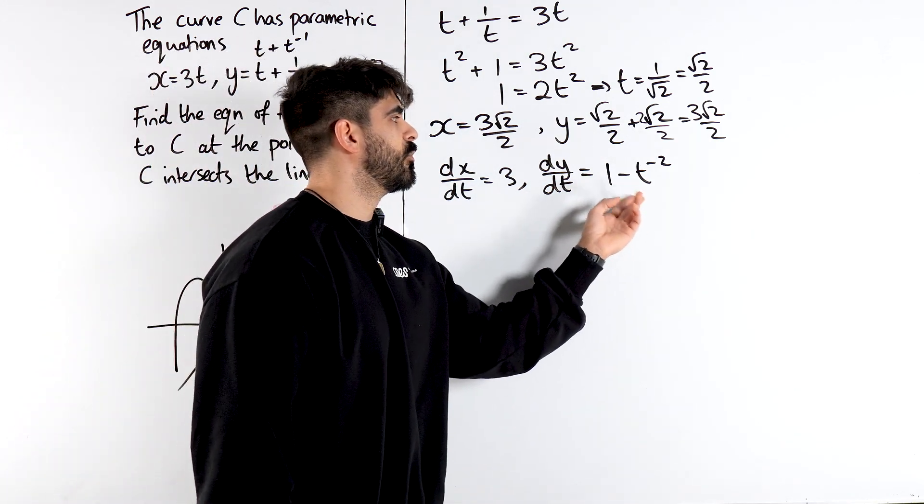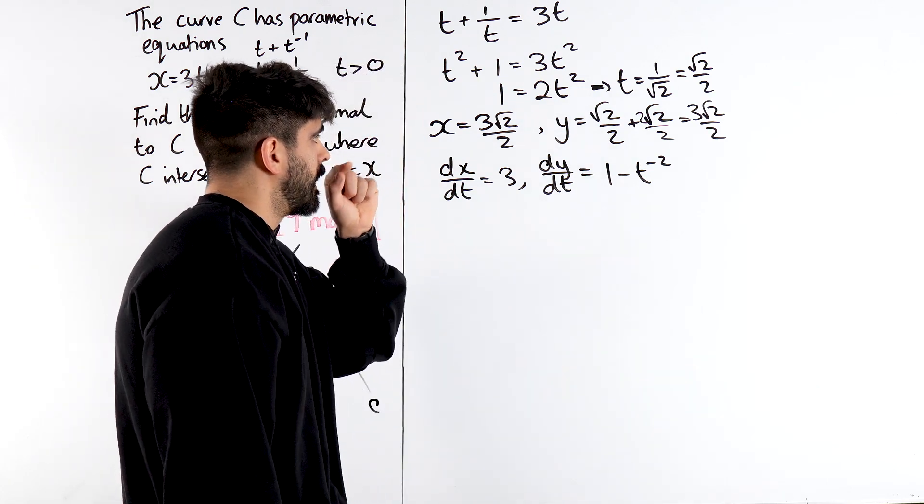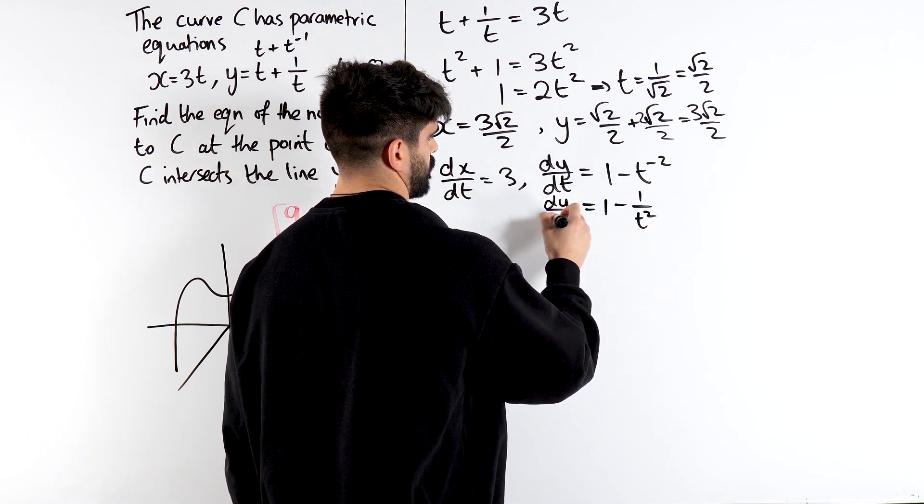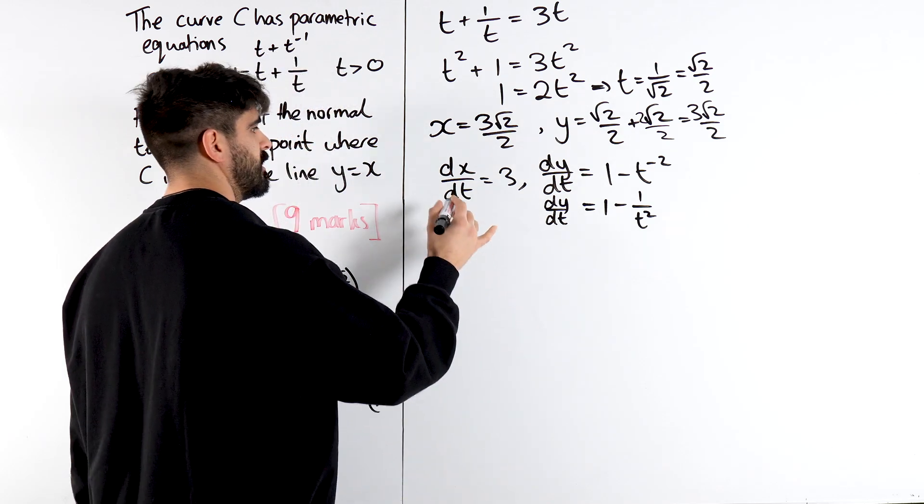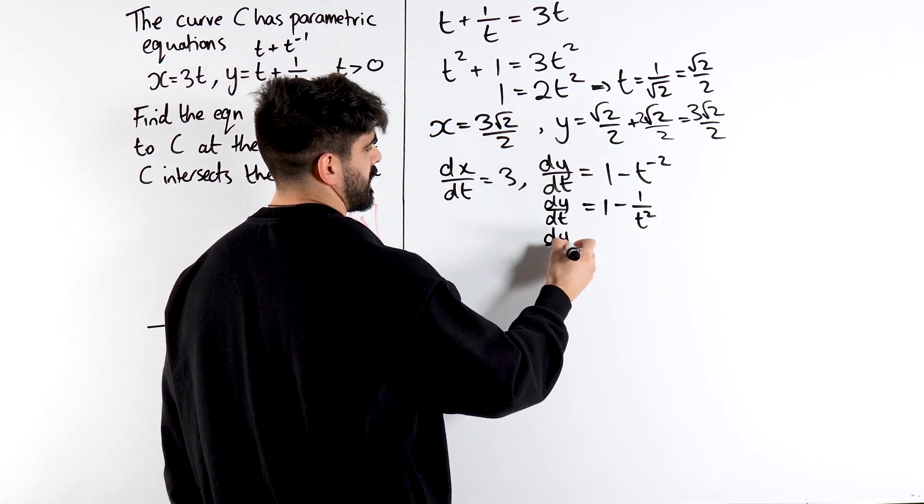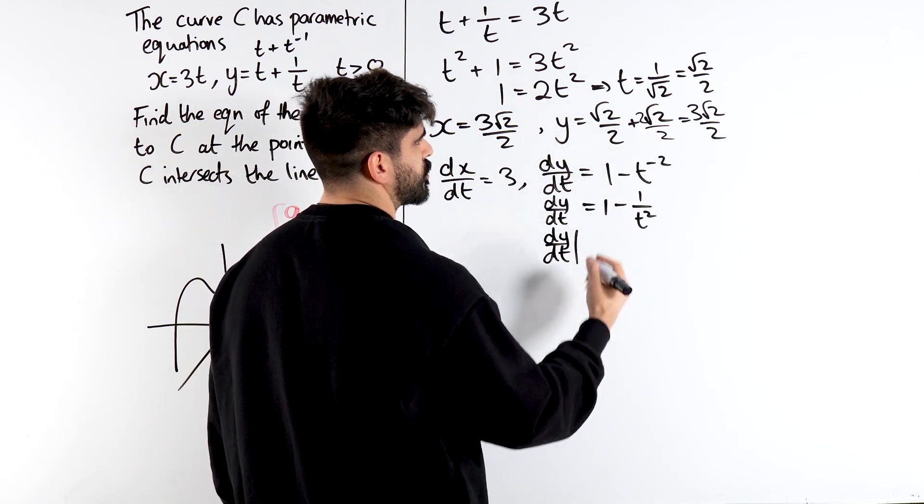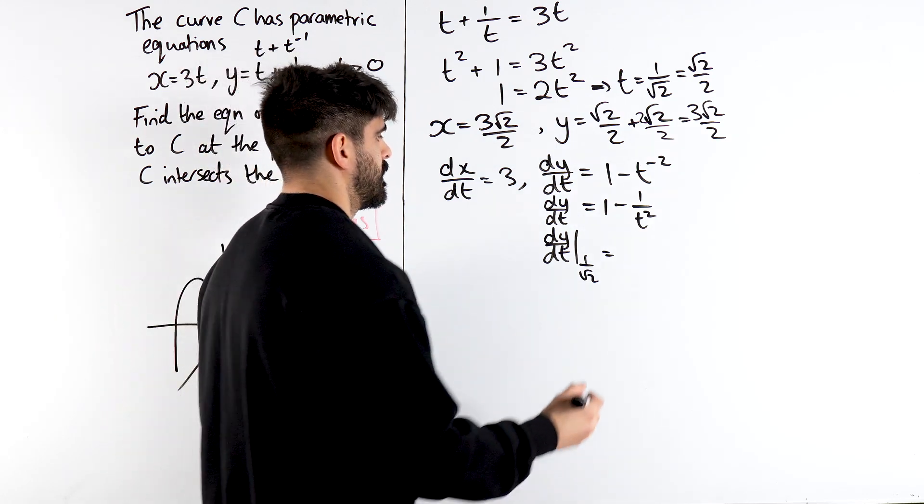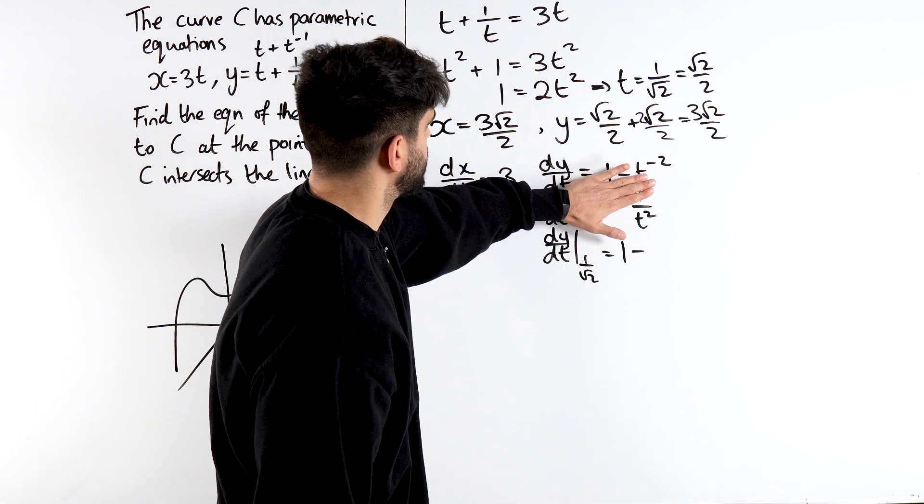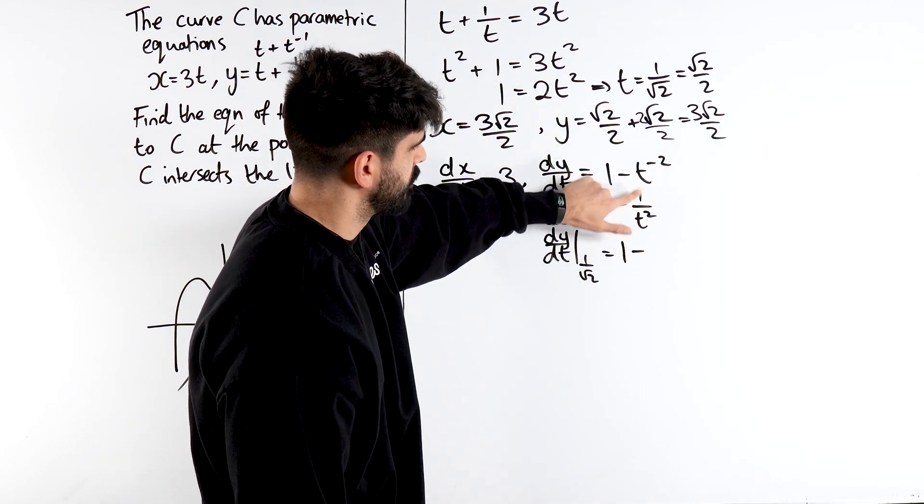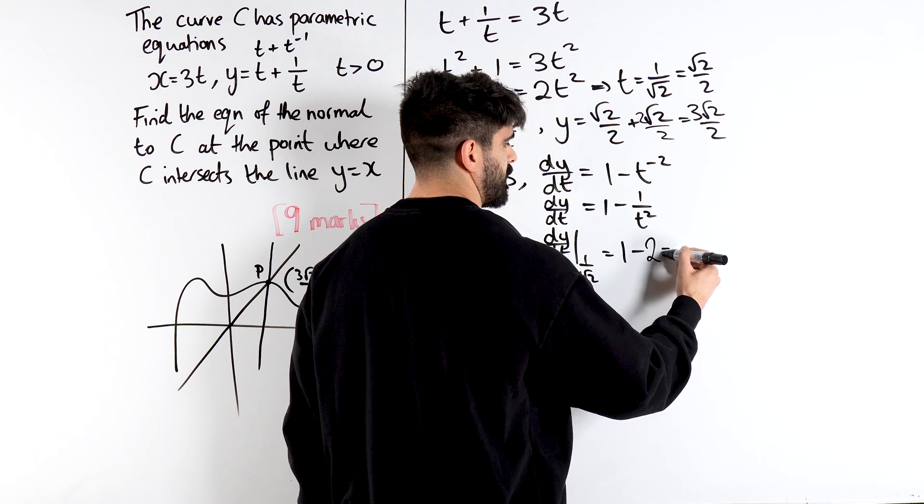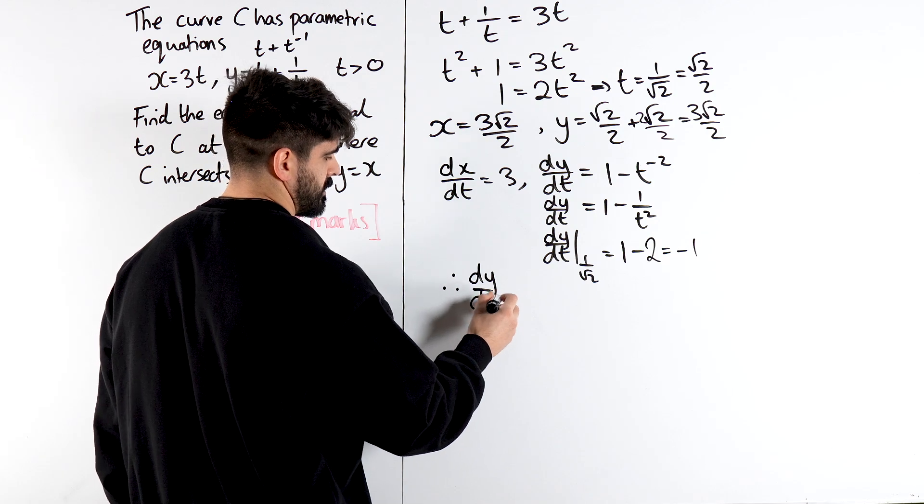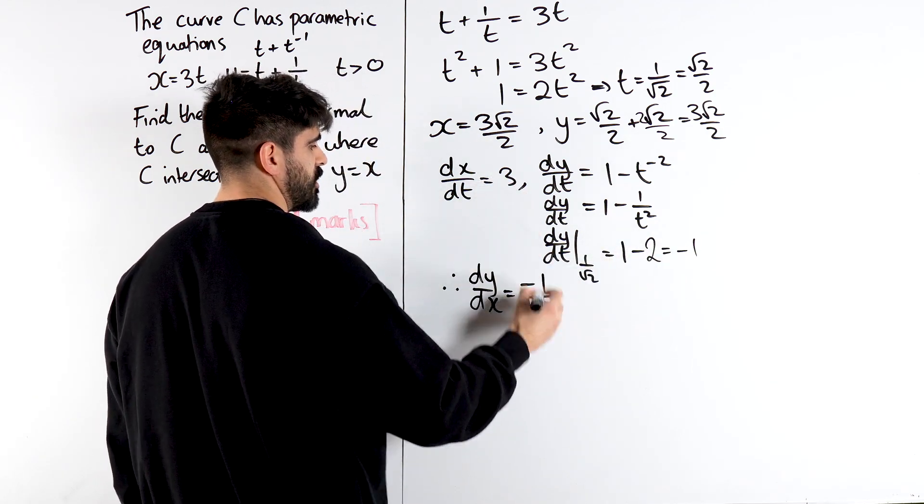Now we just need to sub in our values. You can work out dy by dx now, but if you want you can just sub in your values right now. I could write this as 1 minus 1 over t squared, so it just makes the algebra a little less messy when you substitute now. So we're going to sub in t as 1 over root 2, or root 2 over 2, whichever one will be nicer to substitute. So we'll get 1 minus, now t squared, I already know t squared's a half, so we get 1 over half. 1 divided by a half is 2, 1 minus 2 is minus 1. So my gradient then, dy by dx, is the change in y, which is minus 1, divided by the change in x, which is 3.